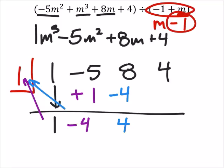And 8 minus 4 is 4. Then finally, 4 times 1 is 4. And 4 plus 4 is 8.